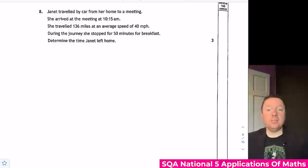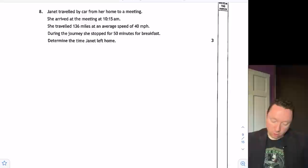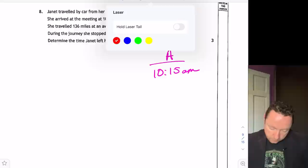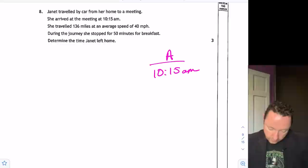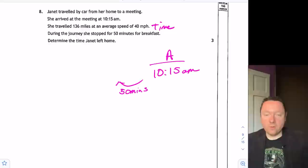National 5 Applications of Maths 2023 Paper 1 Question 8. Janet travelled by car from her home to her meeting. She arrived at the meeting at 10:15. She travelled 136 miles at an average speed of 40 miles per hour. During the journey she stopped for 15 minutes for breakfast. What time did Janet leave home? So we know she arrived at 10:15. So that's our arrival at 10:15. And she travelled 136 miles at an average speed of 40 miles per hour. So we need to work out the time for that. But then during the journey she stopped 15 minutes for breakfast. So I can take away that 15 minutes to start with. So going back 15 minutes, so the easiest way to do that is take away your 15 minutes. That gets me to 10 o'clock and then the difference 35 minutes off of 10 o'clock. So that's 9:25.